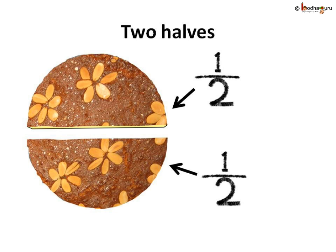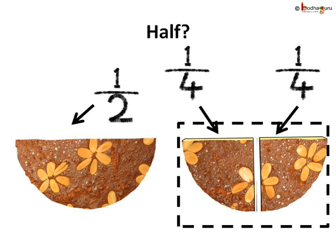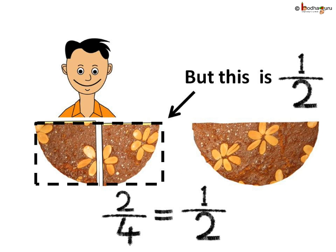Hey, look — here the cake is cut into two halves. And two one-fourth parts is also the same as the half part. So we can say two by four is equal to one by two.